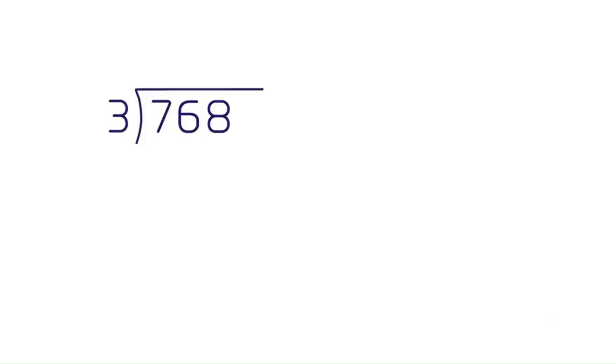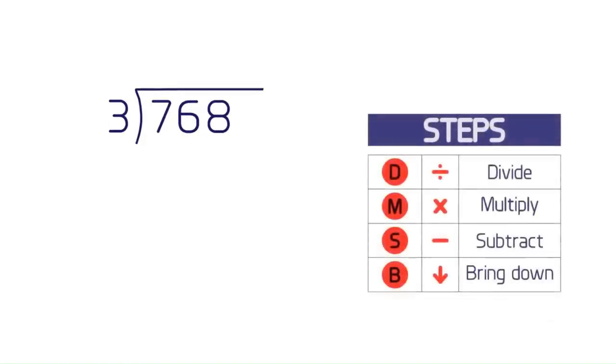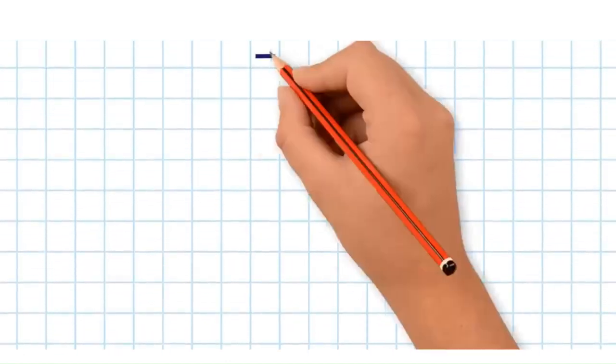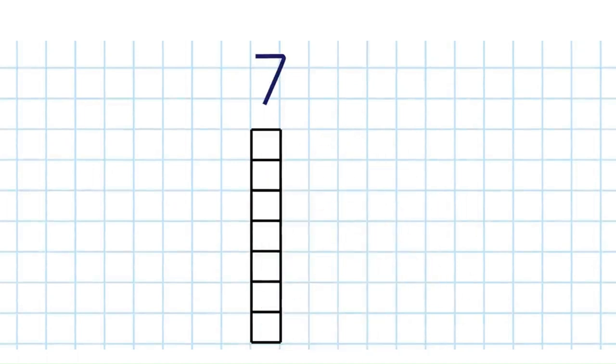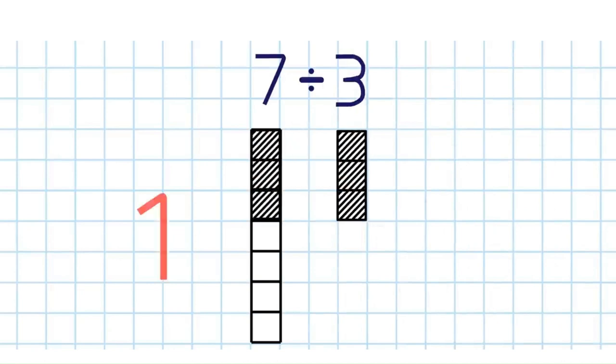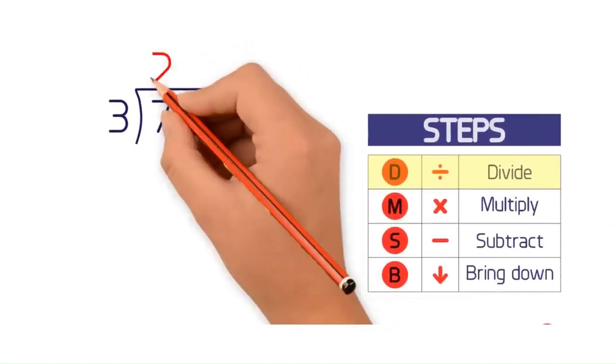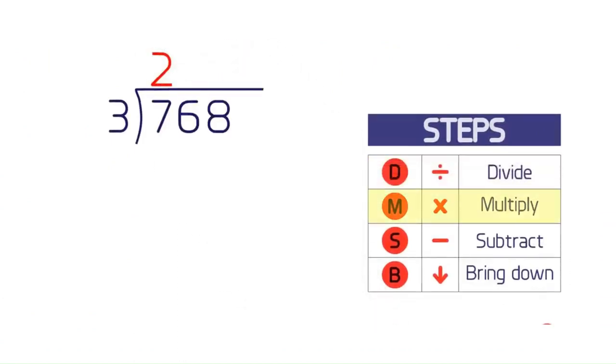To begin, ask how many times 3 goes into 7. That is, what's 7 divided by 3? The answer is 2, with a little left over. So write 2 directly above the 7. Now multiply 3 by 2 to get 6. Place the product directly below the 7 and draw a line beneath it.